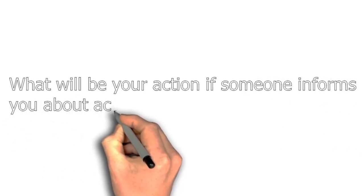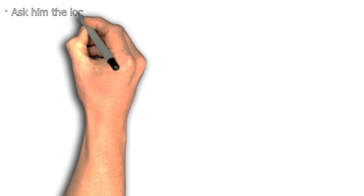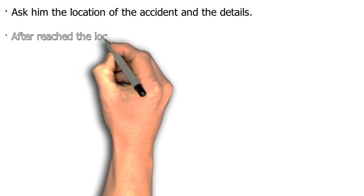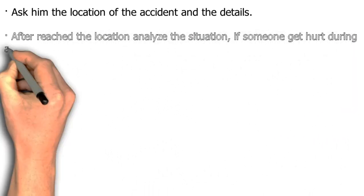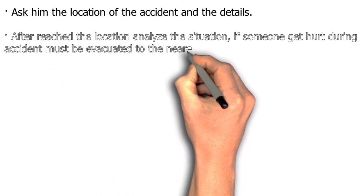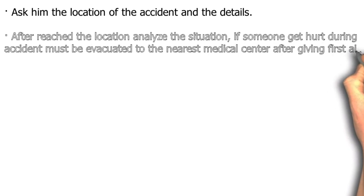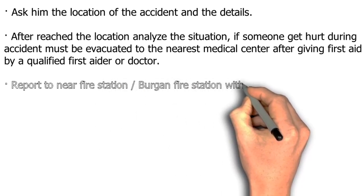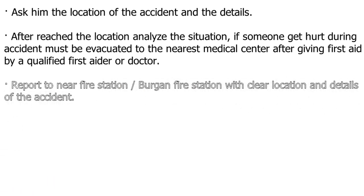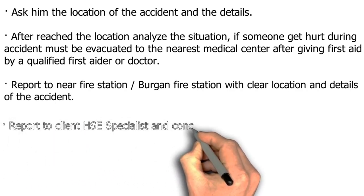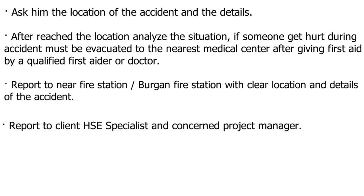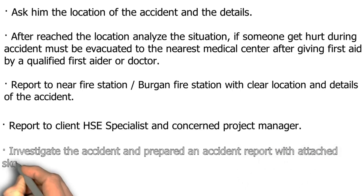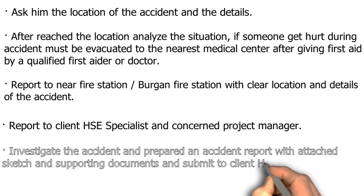What will be your action if someone informs you about an accident? Ask for the location and details of the accident. After reaching the location, analyze the situation; if someone is hurt they must be evacuated to the nearest medical center after first aid by a qualified first aider or doctor. Report to the nearest fire station with clear location and details of the accident. Report to the client HSE specialist and concerned project manager. Investigate the accident and prepare an accident report with attached sketch and supporting documents, then submit to the client HSE department.